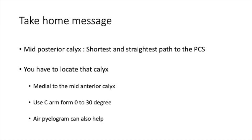The take-home messages: the mid posterior calyx is the shortest and straightest path to the kidney pelvis. It is generally seen medial to the mid anterior calyx. You can rotate the C-arm from 30 to 0 degrees to identify its orientation relative to the anterior calyx — the mid posterior calyx moves medially when you turn the C-arm from 0 to 30 degrees. An air pyelogram can also help, as air reaches this non-dependent calyx and is visible as a shadow on RGP.